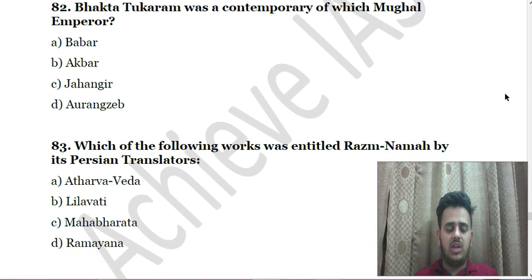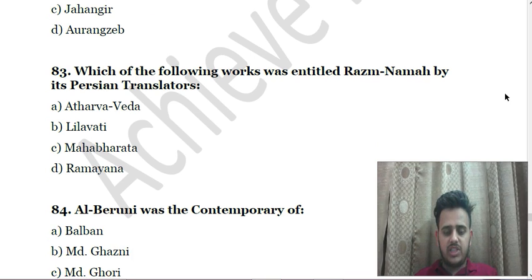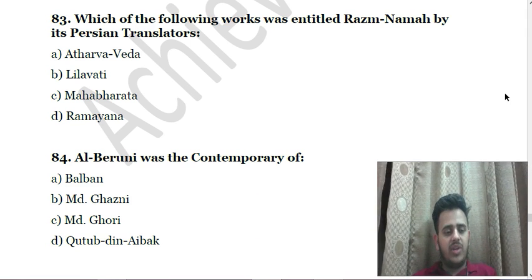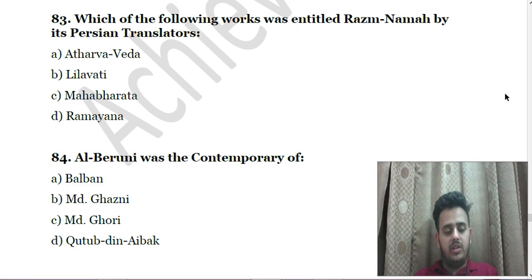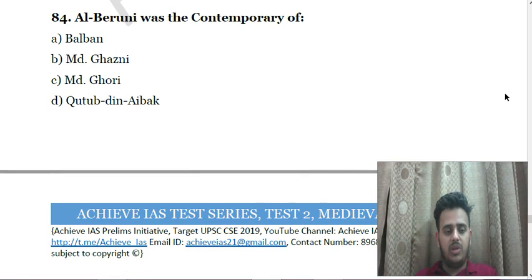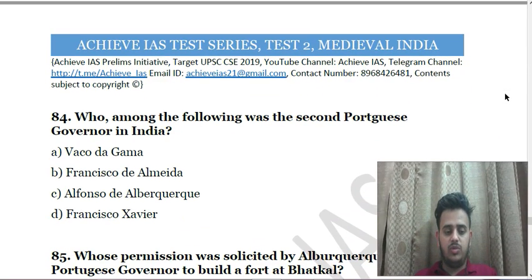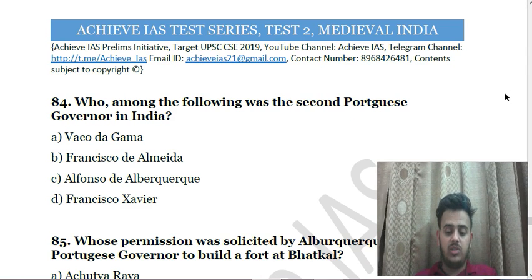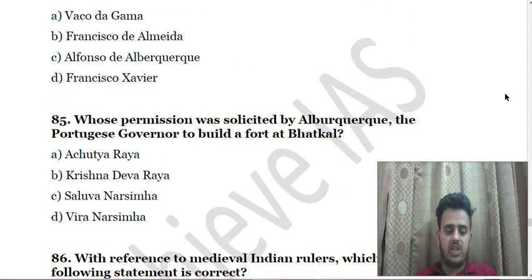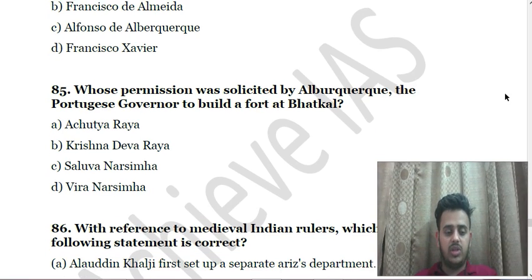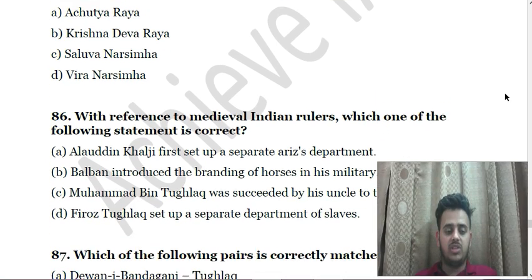Next: In 18th-century India, what was the practice of Ijara-dari? A. Using revenue farmers for collection of state revenue; B. Association of merchants and bankers in management of the central Mughal treasury; C. Auctioning of the right to collect taxes by the British to the highest bidders; D. Military positions in the Mughal state being given on the basis of patronage. Next: Bhakti saint Tukaram was a contemporary of which Mughal emperor? A. Babur, B. Akbar, C. Jahangir, D. Aurangzeb. Next: Which of the following works was entitled Razmnama by its Persian translators? A. Atharva Veda, B. Lilavati, C. Mahabharata, D. Ramayana.